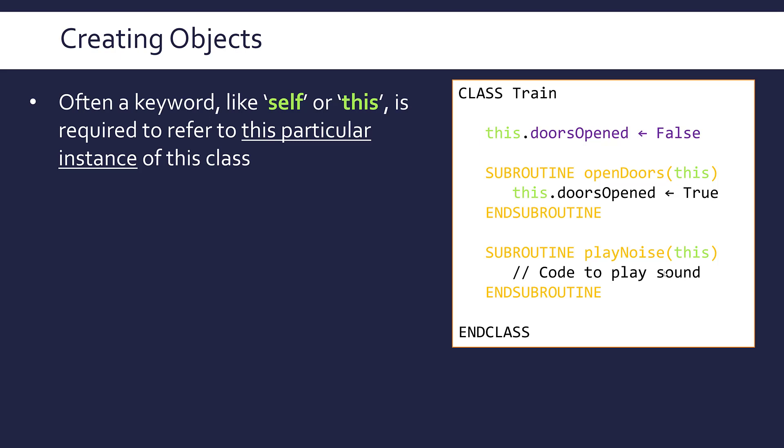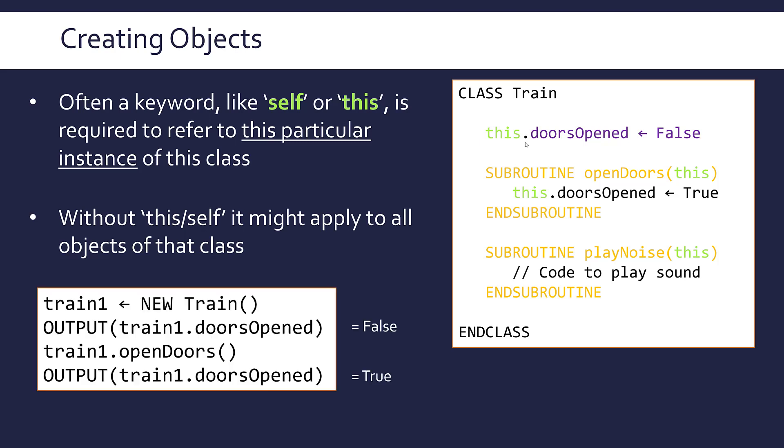It gets confusing at this point sometimes because it almost seems unnecessary. And in some cases it is unnecessary, but once you bring in static methods and static attributes, it becomes more important. Without this keyword telling the language which object it belongs to, it might think you're applying this to all objects of the class. So if we just had doorsOpened being set to false, does that just apply to this one object or does it apply to every object from the train class? It's not clear. 'This' makes it clear that this is a unique value for this particular object.